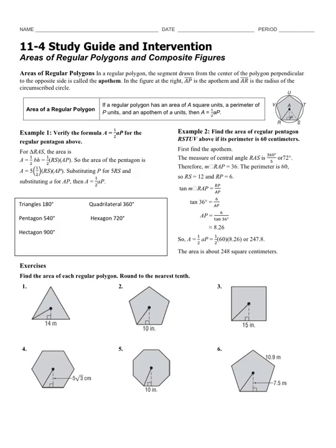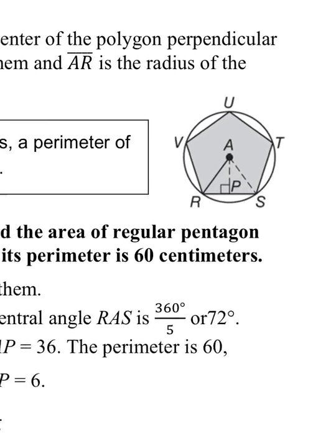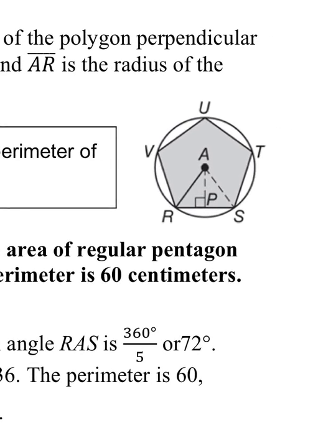The apothem is this line right here. Every regular polygon can have a circle drawn around it. When we go from the center of that shape to the corner, that's the radius of a circle.